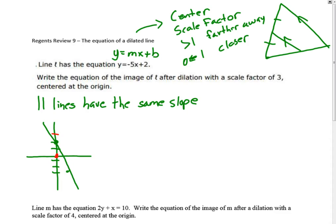Right now it's 2, so we need to go 3, 4, 5, 6. If we were to dilate that, it would move this line up to 6, but it would be a parallel line.